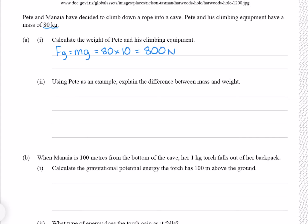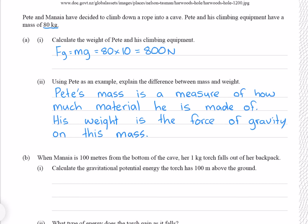Using Pete as an example, explain the difference between mass and weight. If there's one question you need to go into this exam knowing how to answer 100%, it's the difference between mass and weight. Pete's mass is a measure of how much material he is made of. His weight is the force of gravity on this mass.